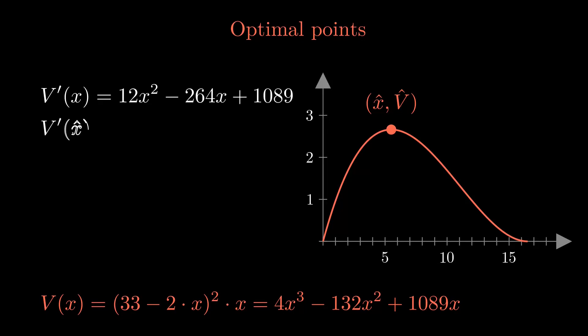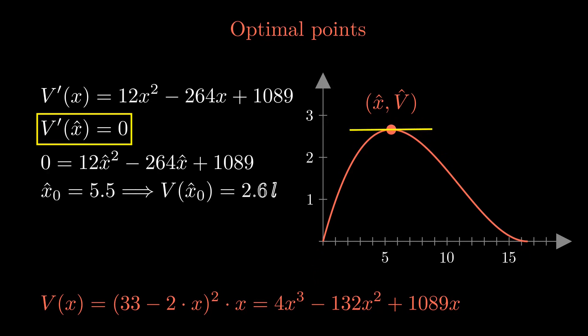The first derivative of the function is a measure for the slope of the tangent at each point of the graph. At the optimal position, the slope of the tangent is zero. The point can be calculated from the condition that the first derivative has to vanish. There are two solutions, one corresponds to the largest and one to the smallest volume.